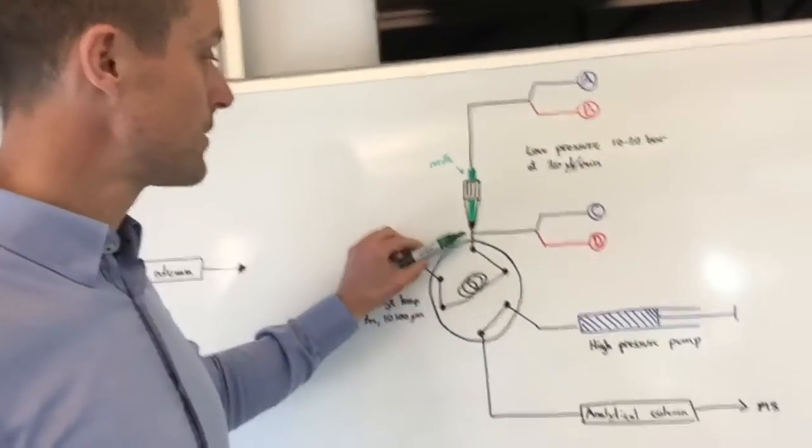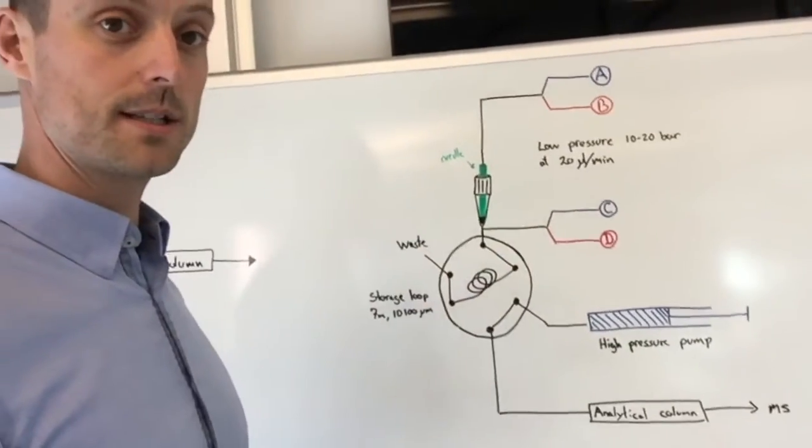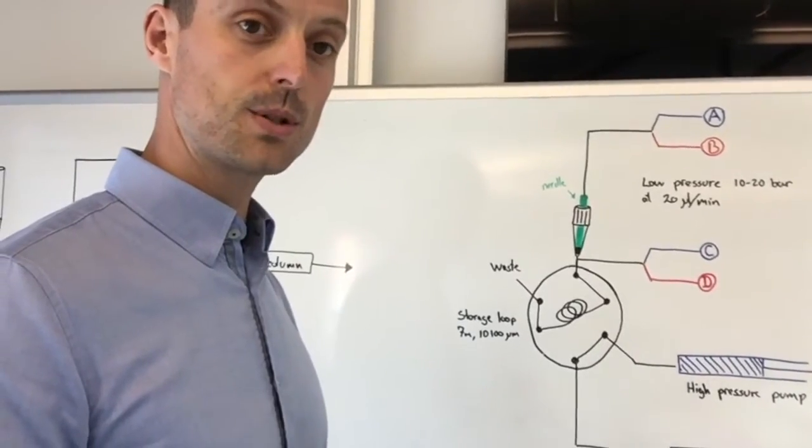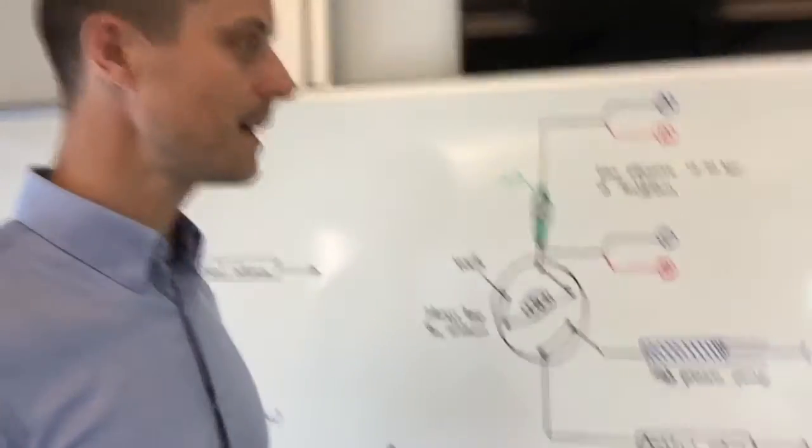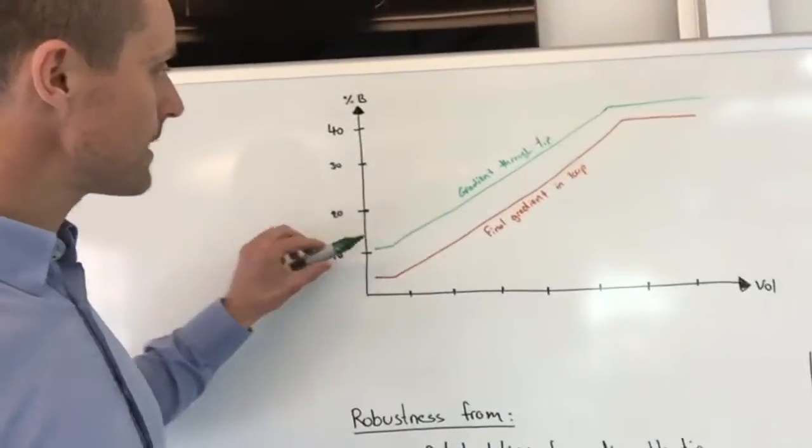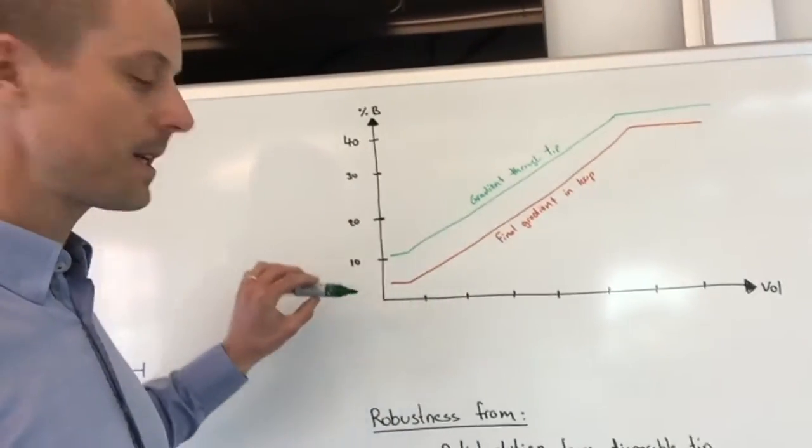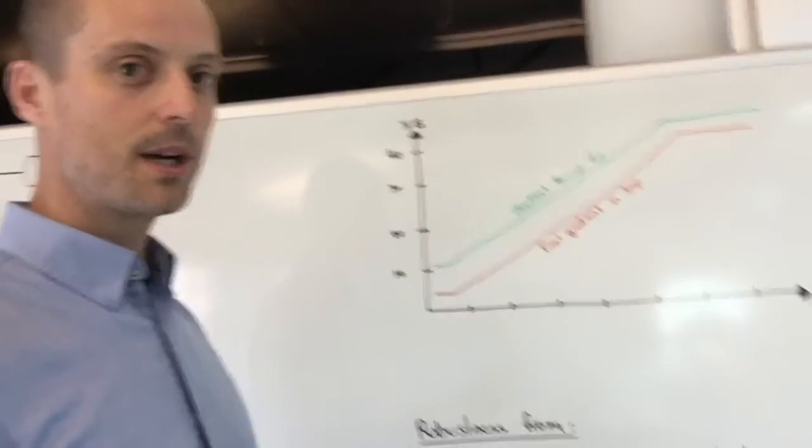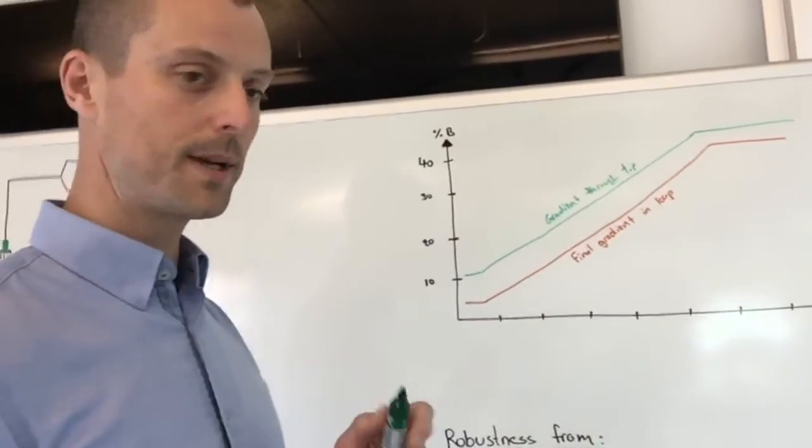This also allows us to introduce a second gradient system. This allows us to manipulate the gradient post stage tip. This is quite interesting and actually gives us some very nice opportunities. Because now we can run a gradient through the stage tip and then we can dilute it slightly into a final gradient which gives us a boost in chromatographic performance.